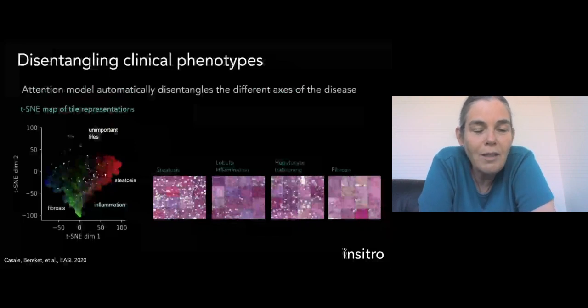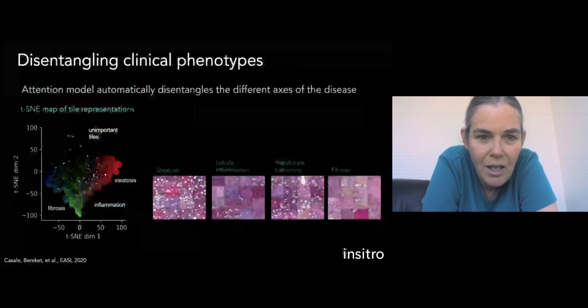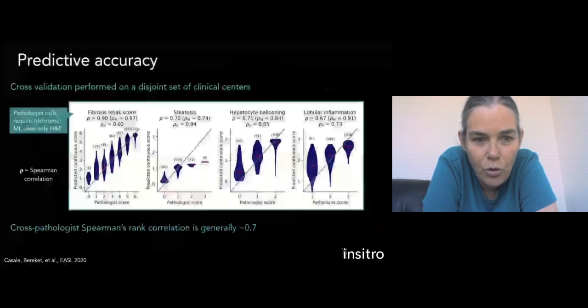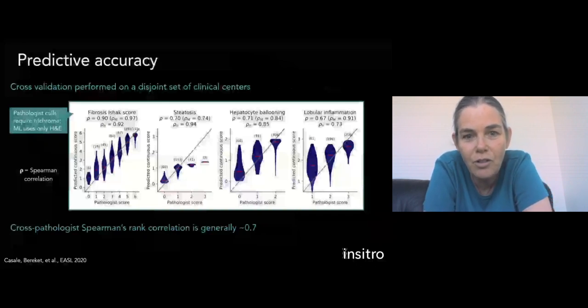Now, if you want to quantitatively validate this, you can use cross-validation relative to the pathologist scores. And here we were very careful about not falling into the trap that was outlined in the Badgley paper. So the cross-validation was performed on a disjoint set of clinical centers than the ones that were used for training. And what you see here is the correlation between the pathologist score and the predicted ML score for those different factors, fibrosis, steatosis, ballooning, and inflammation. And you see that there is a very strong correlation between those different factors.